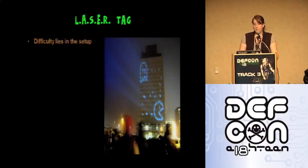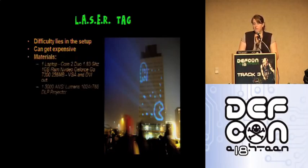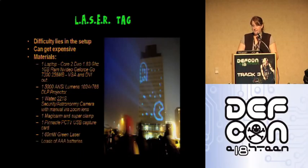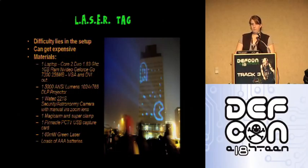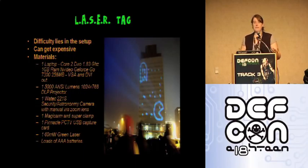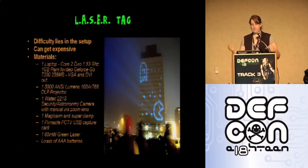The last example for the tried and true section is the Graffiti Research Lab's laser tag. The hardest part is acquiring the parts and setting it up at the site. The materials listed on the GRL site are: a laptop, a 50,000 ANSI lumens projector, a security astronomy camera with manual iris zoom lens, a magic arm with a super clamp, a PC TV USB capture card, and a 60 milliwatt green laser — which is illegal in some places, by the way. Don't shine it in animals' or people's eyes. You'll also need AAA batteries. This setup can get pretty expensive, so it's worth looking around at eBay, Craigslist, or pawn shops.